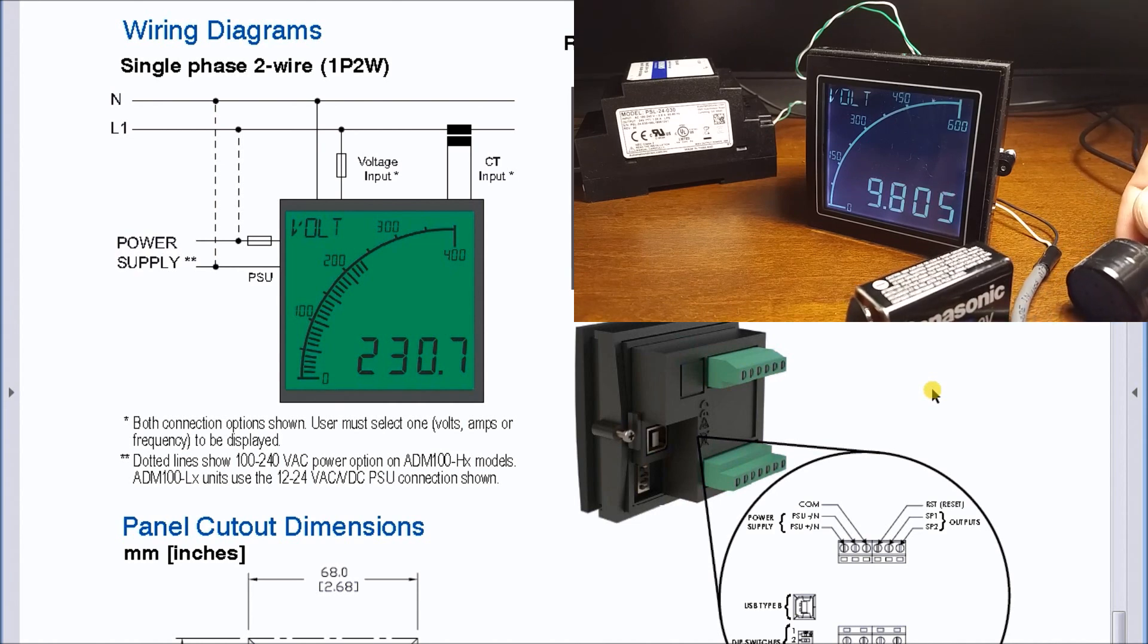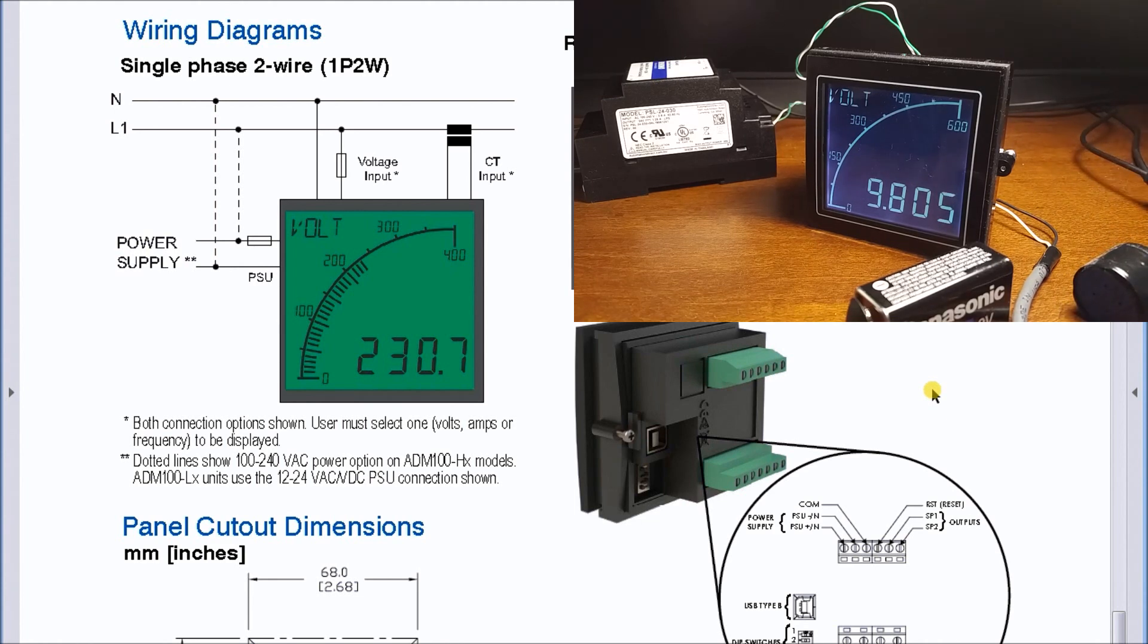So there's the maximum of the pot. That battery is actually outputting 9.805 volts right now, so it's a fully charged battery. Very nice little unit, you can see the display is very nice.